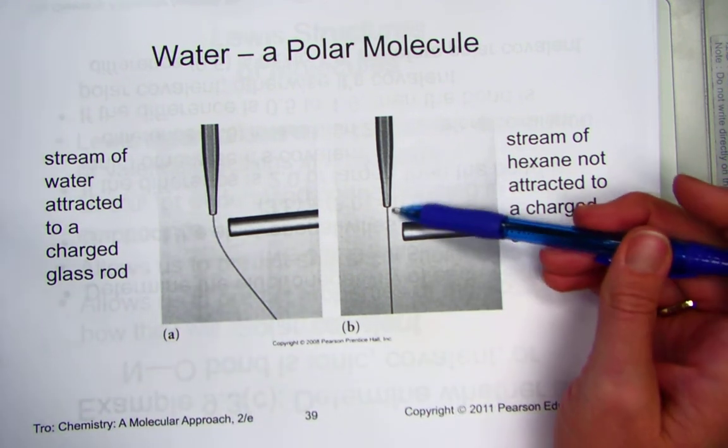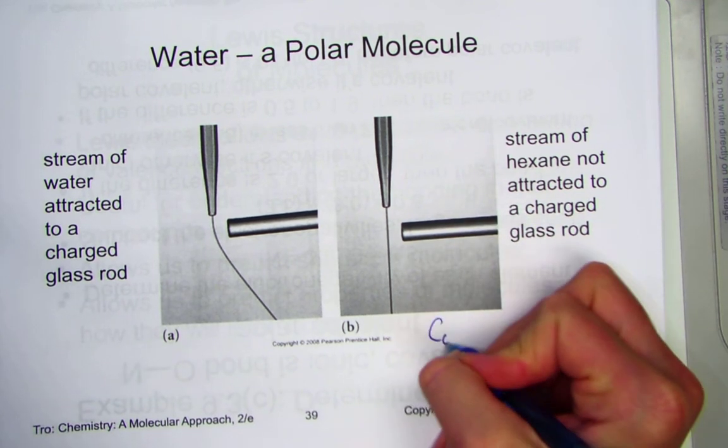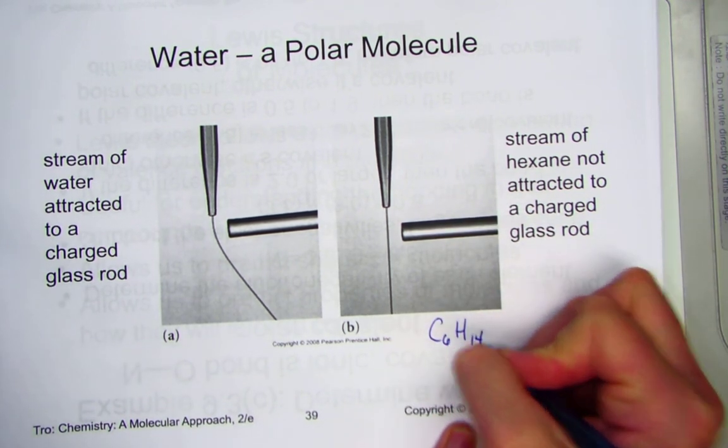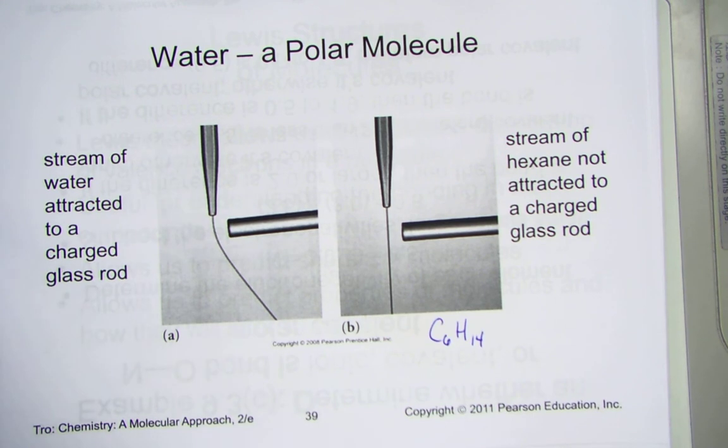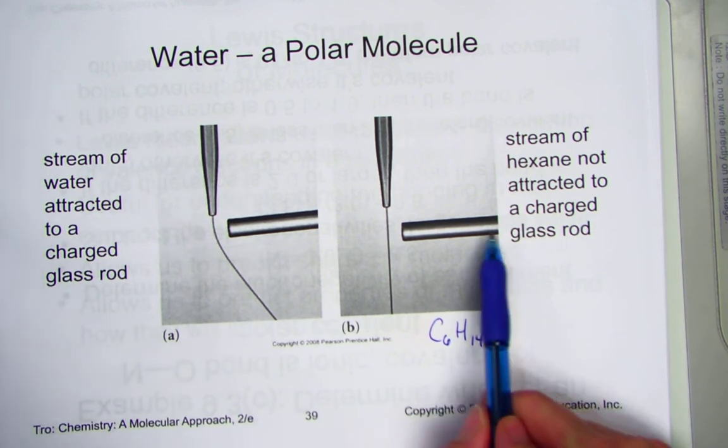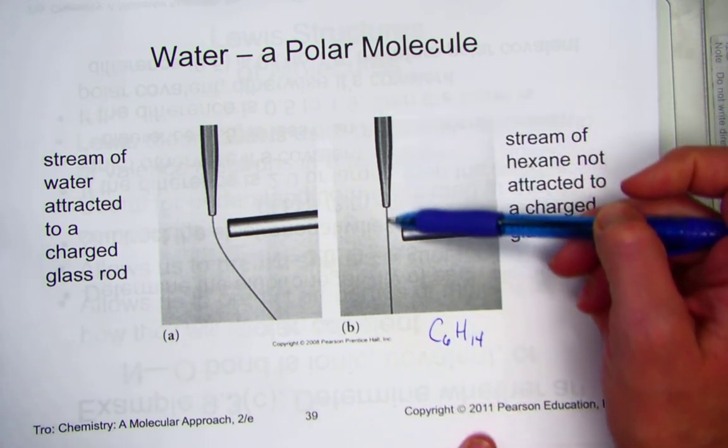In this picture, this is a stream of hexane. C6H14 is that organic molecule. Again, if I have a glass rod that has been charged and I stream hexane...